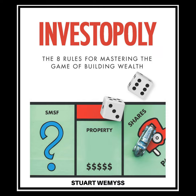As you start approaching 60, you want to start thinking about the mix of assets that you have and start concentrating on getting more income. You can do that through changing the mixture of assets — going closer to say commercial property and further away from residential property — or even with your super investments, you can start investing in income-style investments like bonds or high dividend paying shares and these sorts of things.